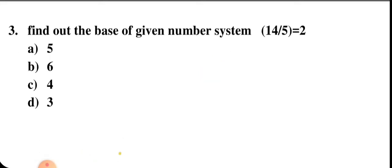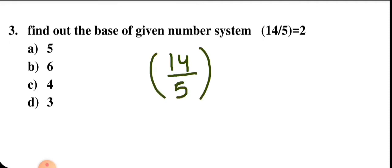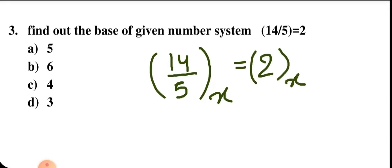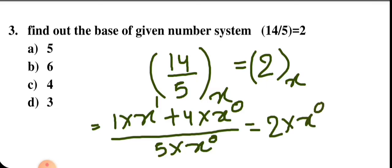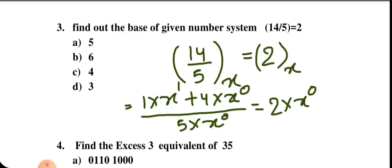Next question: find the base of the given number system where 14 divided by 5 equals 2. Let the base be x. Converting the upper portion to decimal: (1·x¹ + 4·x⁰) divided by (5·x⁰). Solving, we get x plus 4 divided by 5 equals 2.